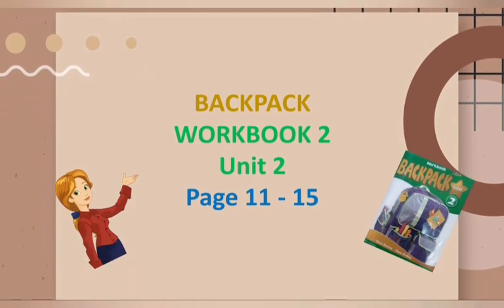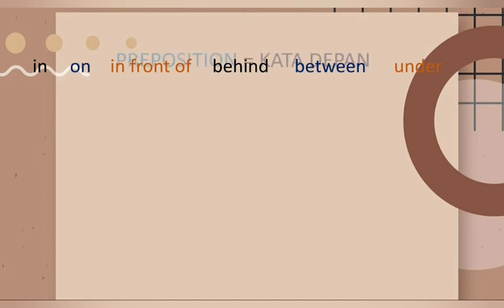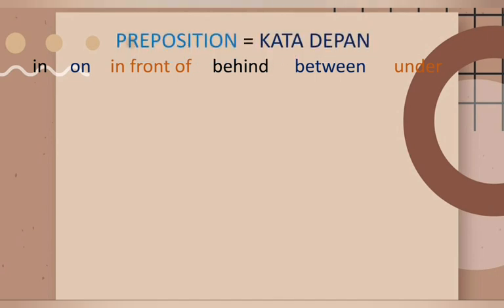Our lesson today is taken from Backpack Word Book Unit 2, page 11 to 15. On page 11 and 12, you will find words like: in, on, in front of, behind, between, and under. These words we call prepositions, atau kata depan.